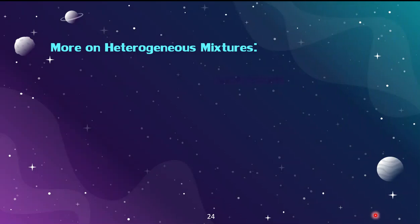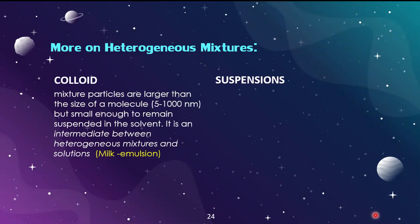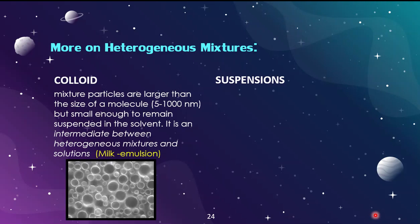We can look more deeply at heterogeneous mixtures by examining colloids and suspensions. Colloids have particles larger than those in a homogeneous mixture or solution, but small enough to remain suspended within the solvent. For example, milk at the microscopic level shows globules of fat suspended in the solvent. Colloid particles are generally between 5 and 1,000 nanometers — small enough to remain suspended without settling to the bottom. Technically a colloid is intermediate between homogeneous and heterogeneous, but for our purposes we classify it as a heterogeneous mixture.